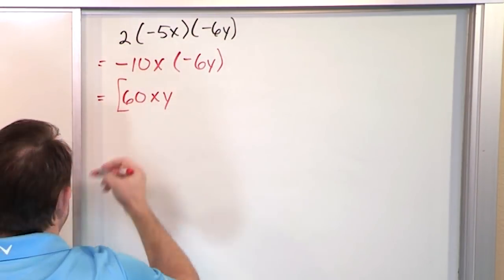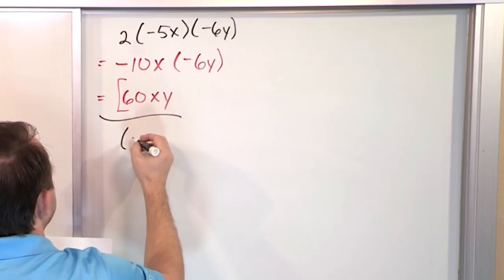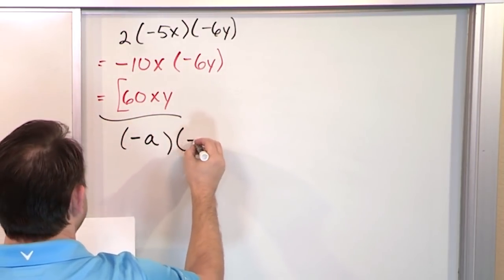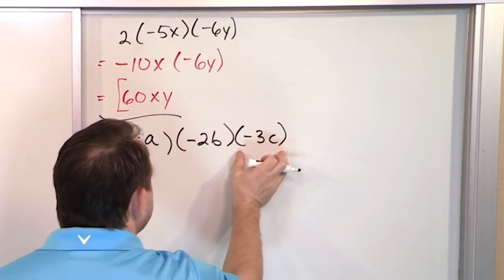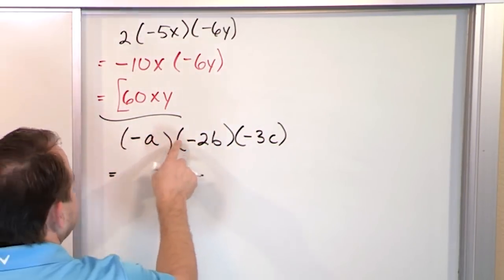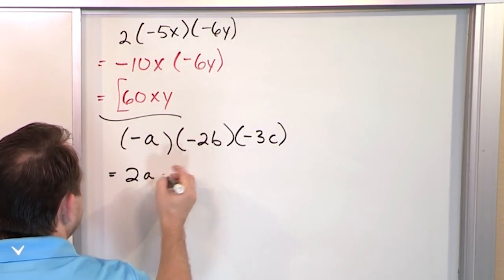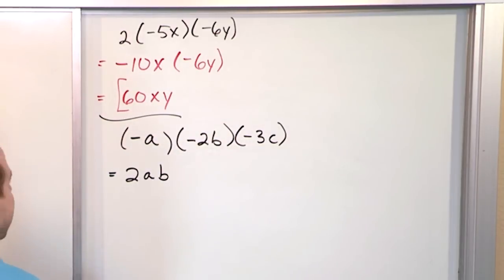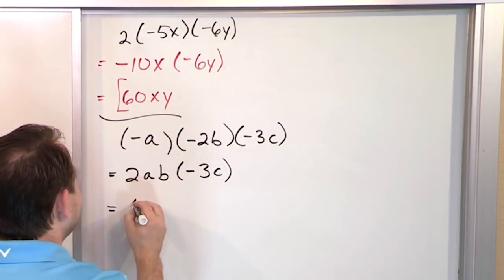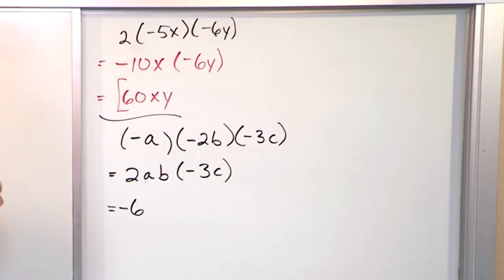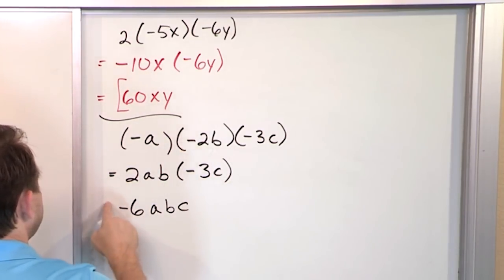The signs work exactly the same way — negative times negative is positive. What if we had negative a times negative 2b times negative 3c? Same kind of thing, term times term times term. Negative times negative is positive, and the only numbers here are 1 times 2, so it'll be 2ab. But we still have to multiply by negative 3c: 2 times 3 is 6, but negative times positive is negative. So you get negative 6abc as the final answer.